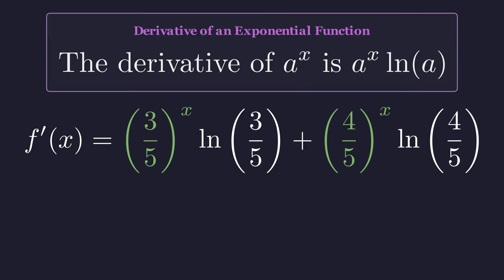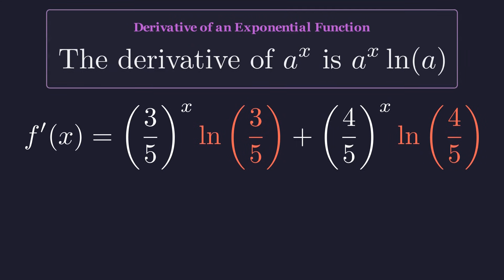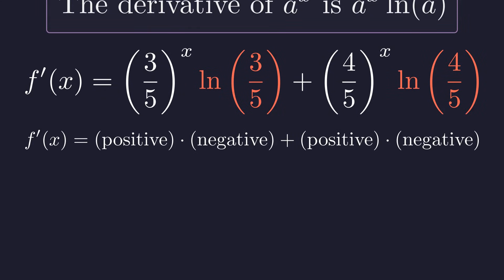Let's analyze the sign of this derivative. The exponential terms are always positive for any real x. But the natural logarithm of any number between 0 and 1 is always negative. So the derivative is a positive times a negative, plus another positive times a negative.